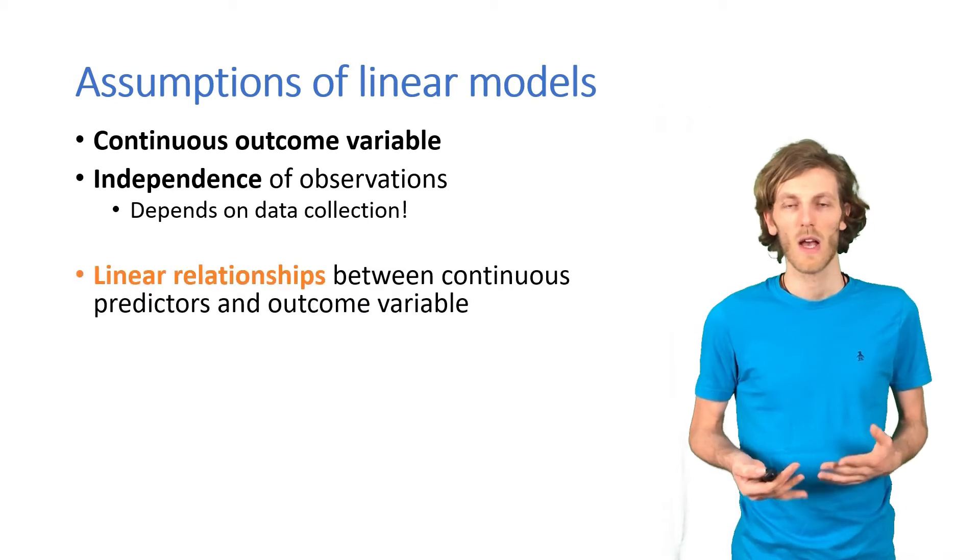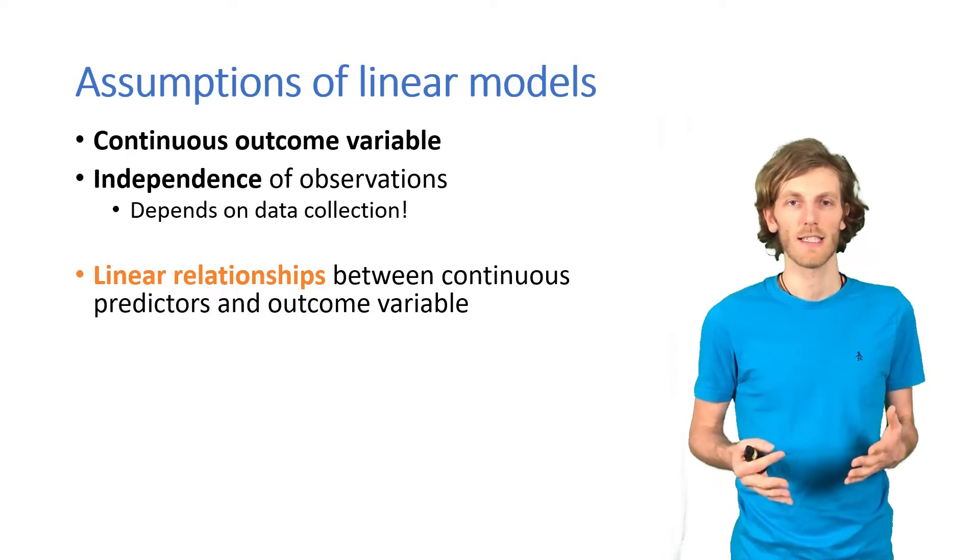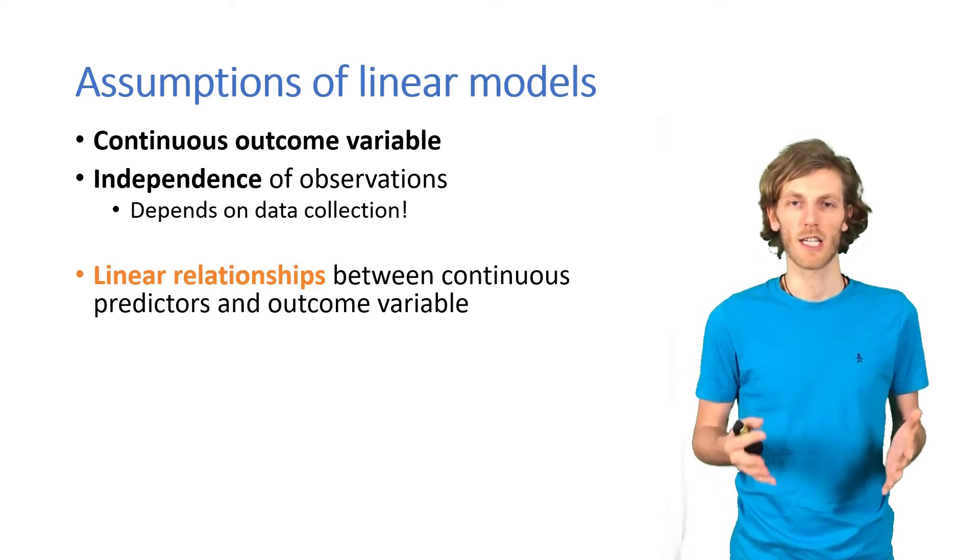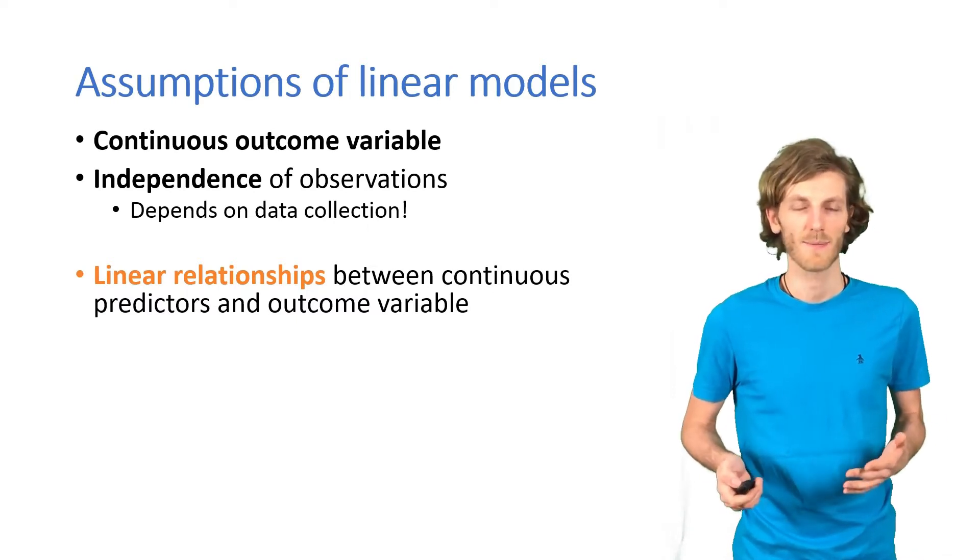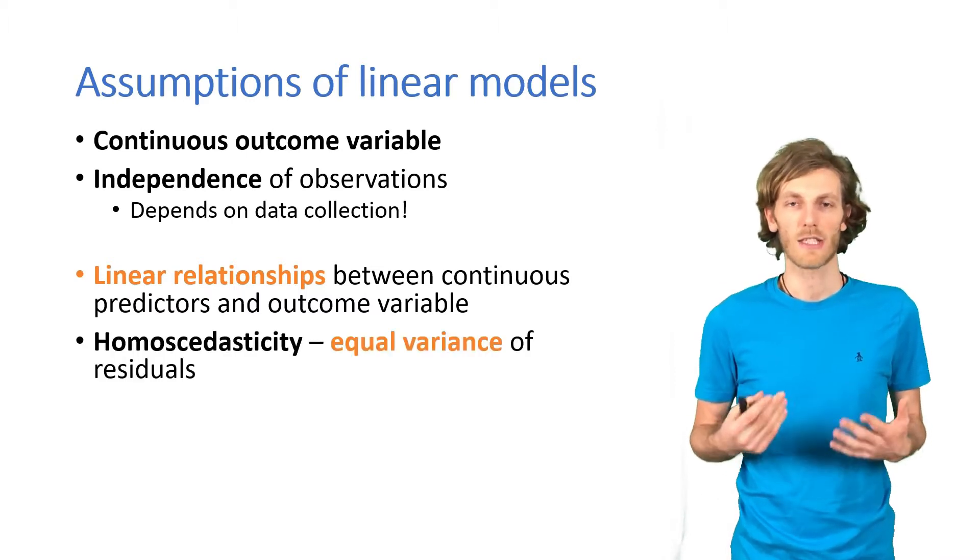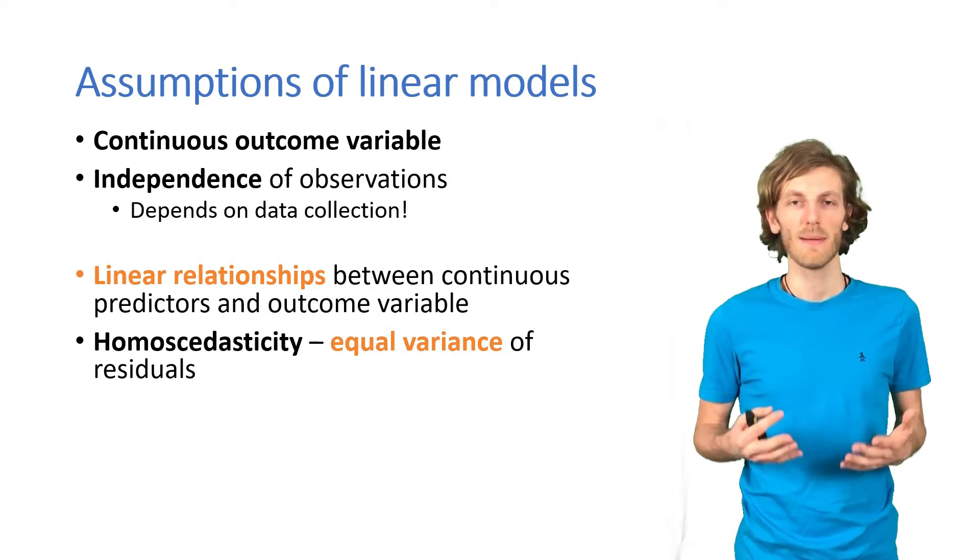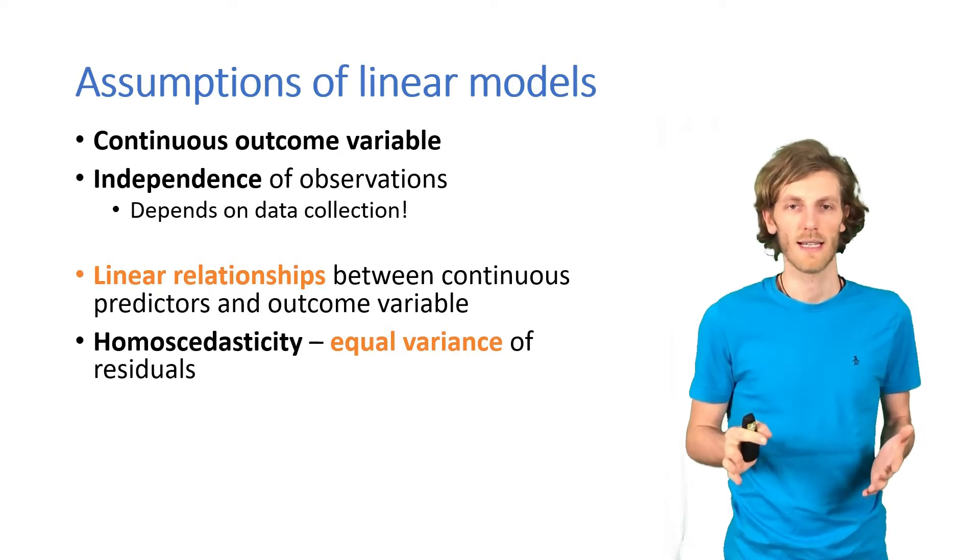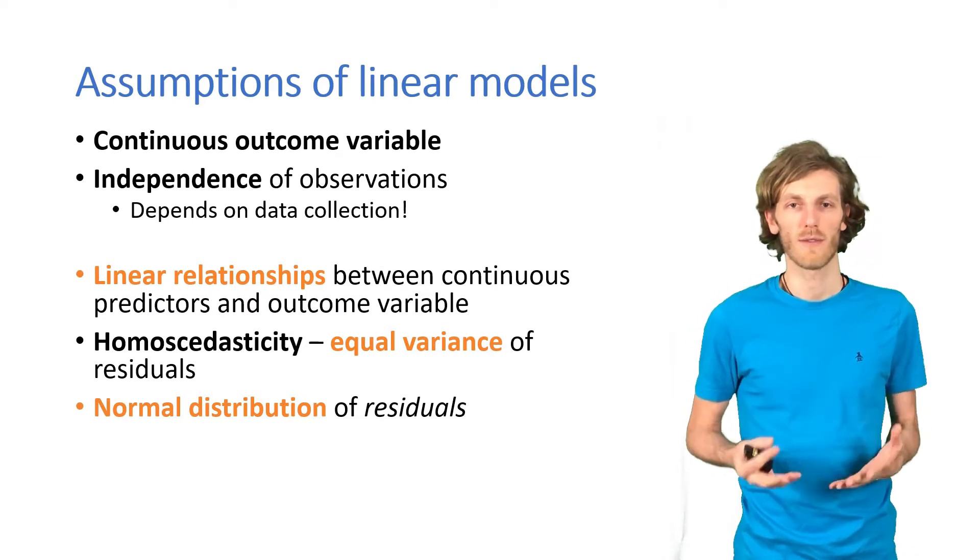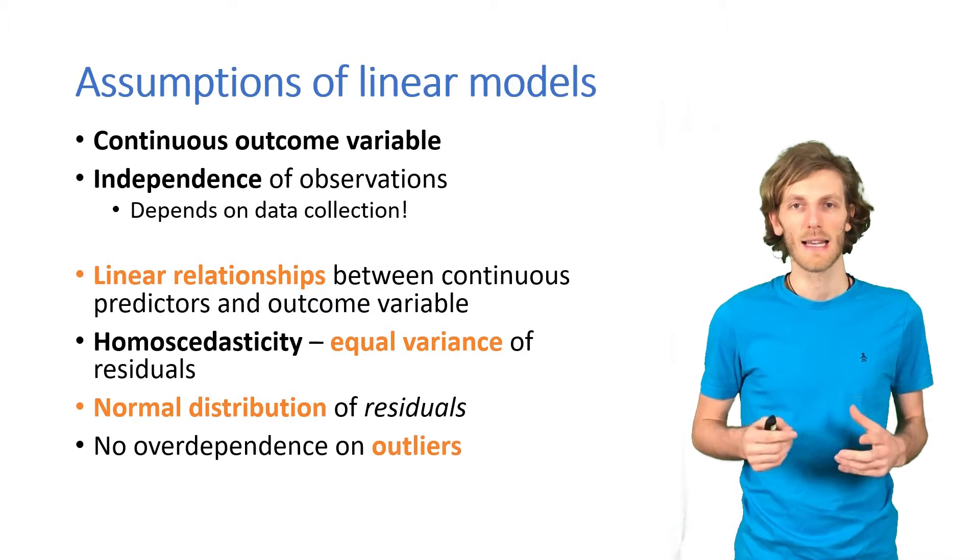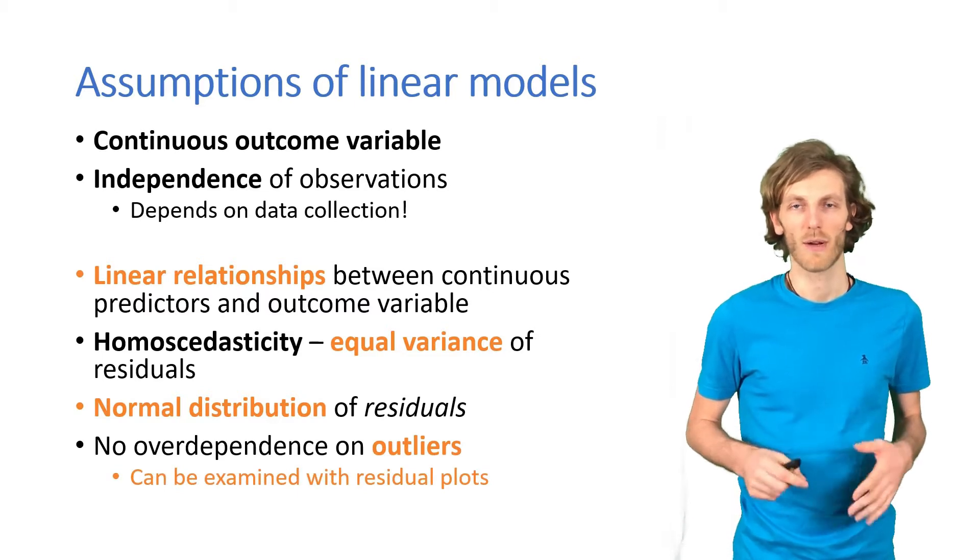Then, once we actually have the data, one key thing to consider is whether we actually have linear relationships. If the relationships have any other shape, our model parameters aren't going to make much sense. We also assume homoscedasticity, which just means that there is equal variance at all points along the regression line. We also assume a normal distribution of the residuals. And finally, that there are no important outliers. Those four conditions, they can all be tested by looking at residual plots.